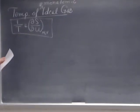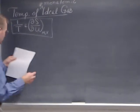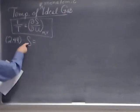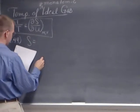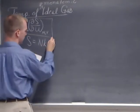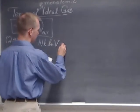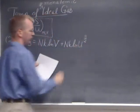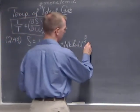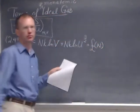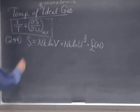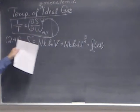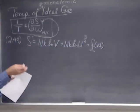I'll take the entropy from the Sackur-Tetrode equation — equation 2.49 — which gives the entropy. Substituting this into the formula for temperature and taking the derivative with respect to U.